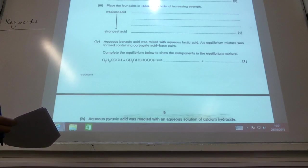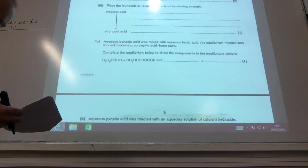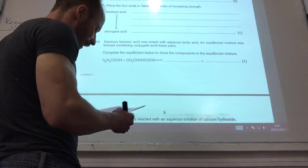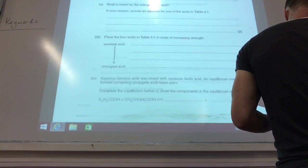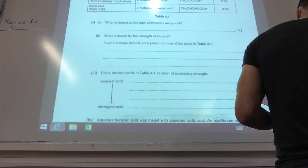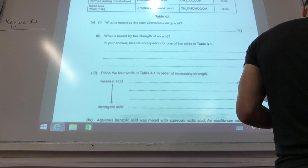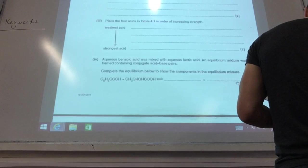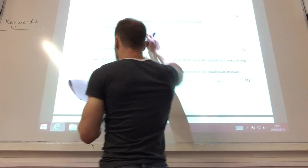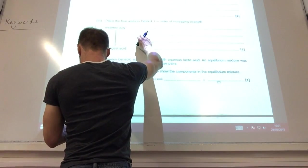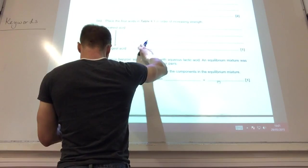We now need to place the four acids in order of increasing strength. What's the weakest one? If we go back to our table, the one with the highest pKa is acetic acid, so that's the weakest one. The one with the lowest is pyruvic acid. You just basically put them in order. So it goes acetic, benzoic, lactic acid, and then pyruvic acid.